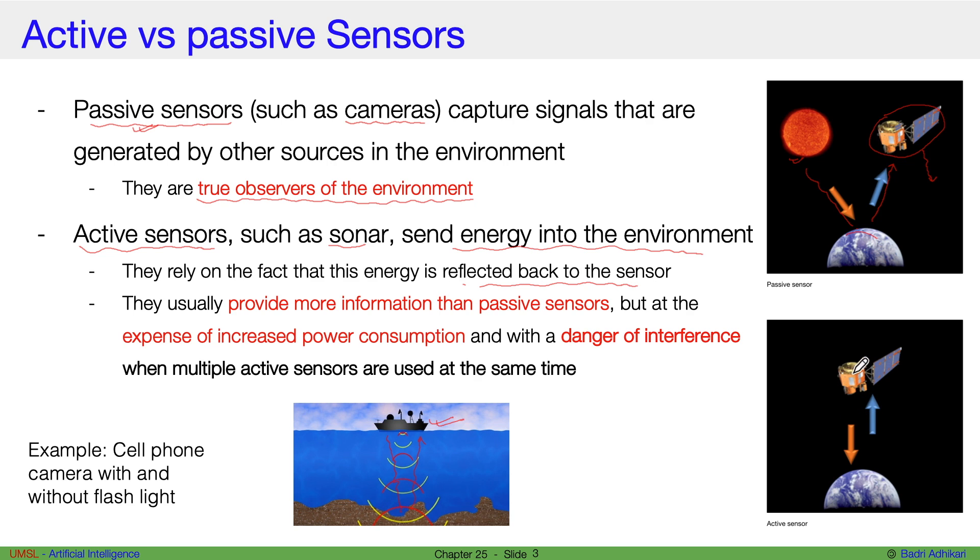So of course, if this is an active sensor, they release some energy to the environment and then they read the energy back. The energy might go bounce off to other places as well, but they rely that some of the energy will be bounced back to them so that this energy can be read and understood.